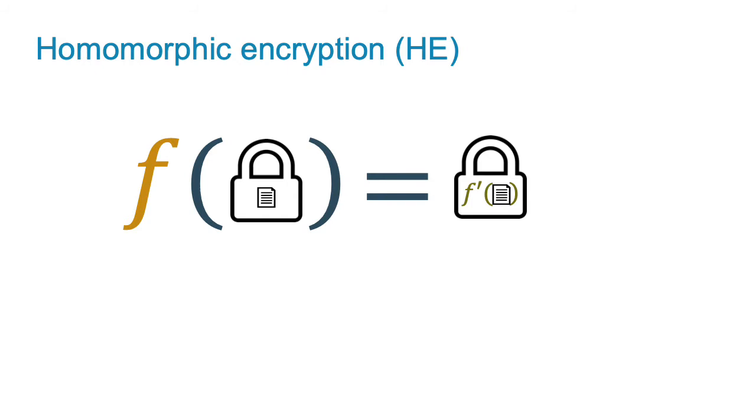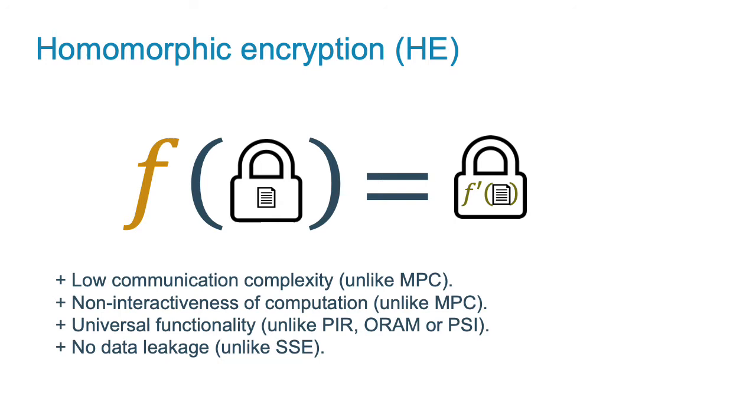This is exactly what homomorphic encryption can do. In general HE allows to compute any function on ciphertexts such that it results in a related function on plaintexts without decryption. In our use case HE has the following advantages over other cryptographic primitives. Namely, unlike in multi-party computation it has low communication complexity and doesn't demand interactions between the client and the server for computation.